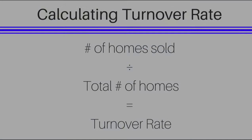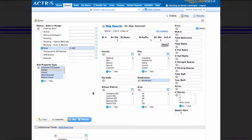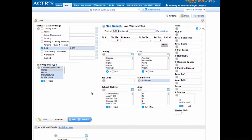To calculate the turnover rate, you'll take the total number of homes sold, found in Matrix, divide that by the total number of homes in the neighborhood, found in Realist, and that's where you get your turnover rate. So the first thing we want to do is go to Matrix and find out the total number of homes sold in that subdivision.